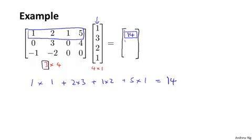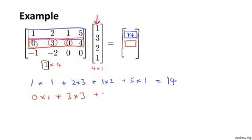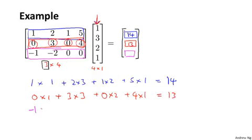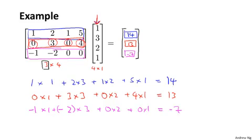For the second element, I take this row and multiply it with the vector: 0 times 1 plus 3 times 3 plus 0 times 2 plus 4 times 1, which is 9 plus 4, giving 13. And finally for the last element, I take the last row: minus 1 times 1 plus negative 2 times 3 plus 0 times 2 plus 0 times 1, which is minus 1 minus 6, giving negative 7. So my final answer is negative 7.